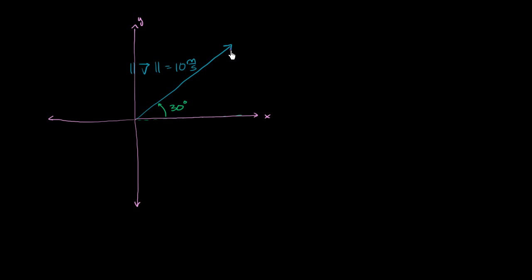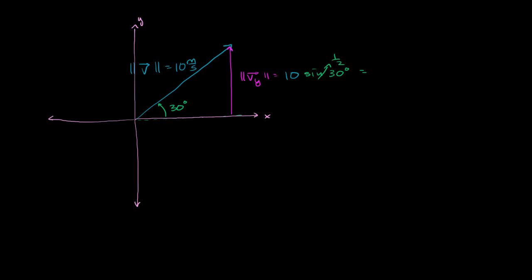We've broken down these vectors in the past before. The magnitude of the vertical component right over here is going to be 10 sine of 30 degrees — 10 meters per second times the sine of 30 degrees. This comes from basic trigonometry, SOHCAHTOA, which I covered in more detail in previous videos. Sine of 30 degrees is 1/2, so 10 times 1/2 gives us 5 meters per second. That's the magnitude of the vertical component.